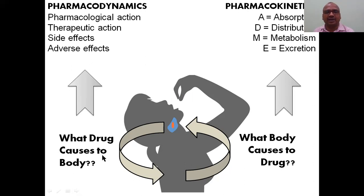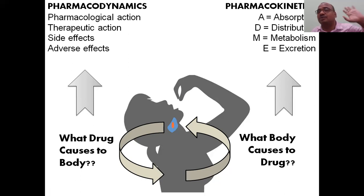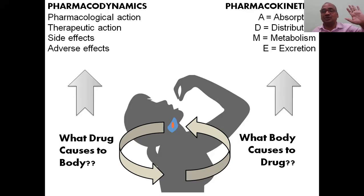What the drug causes to the body is called pharmacodynamics. Whereas what the body causes to the drug is called pharmacokinetics. Pharmacodynamics includes pharmacological action, therapeutic action, side effects, adverse effects, and allergic reactions — whatever is done by the drug to the body comes under pharmacodynamics.